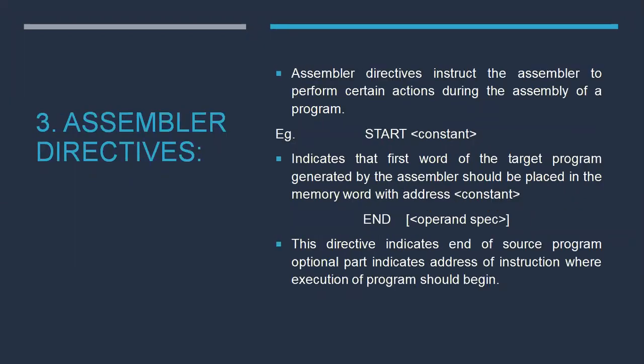Next are assembler directives. The name itself indicates that assembler directives instruct the assembler to perform certain actions during the assembly of the program. We have two examples: START and END. START with a constant in brackets indicates that the first word of the target program generated by the assembler should be placed at the memory word with the address given by that constant. END, with an optional operand specification, ends the source program; the optional part indicates the address of the instruction where execution should begin.